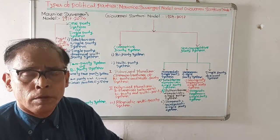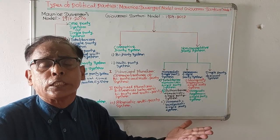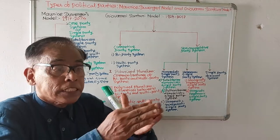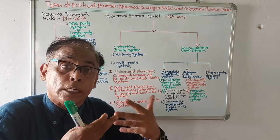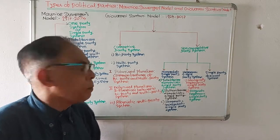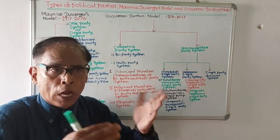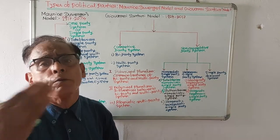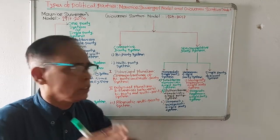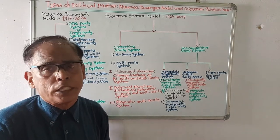He has also told there are some dissimilarities between the multi-party system and bi-party system. The first dissimilarity is that in a multi-party system, coalition government is possible because political parties sometimes form the government together. But in a bi-party system, coalition government is not possible — either one party or the other comes to power. In multi-party system, there are chances of coalition government.